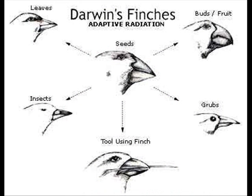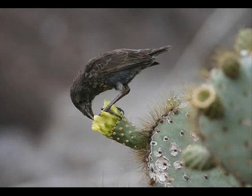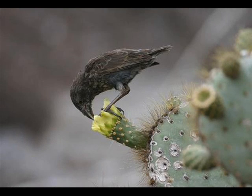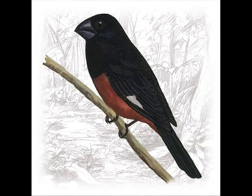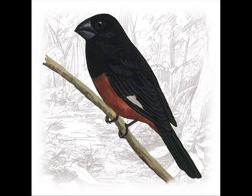These finches had different adaptations for different ecological roles. For example, the cactus-eater finch had a long, sharp beak to help it eat cactus, and the seed-eater finch had a differently shaped beak adapted for cracking seeds. All of these different adaptations help the organisms enhance their survival and reproduction in a specific environment.